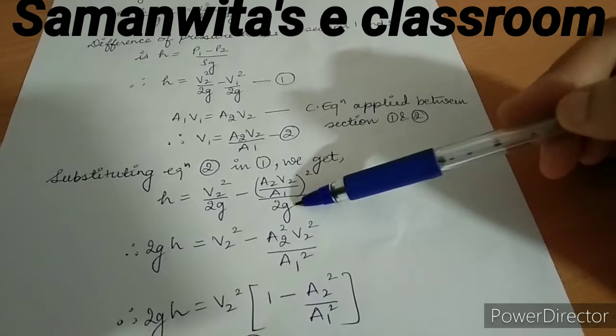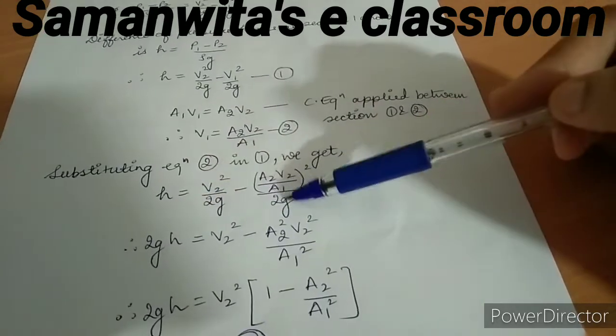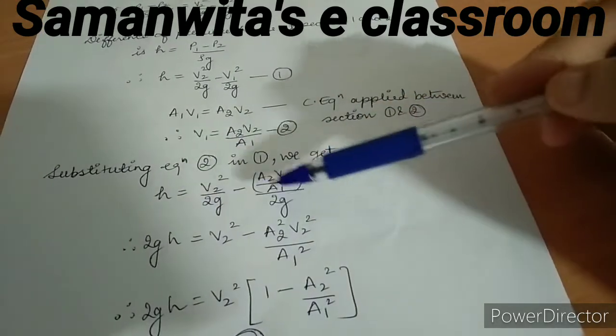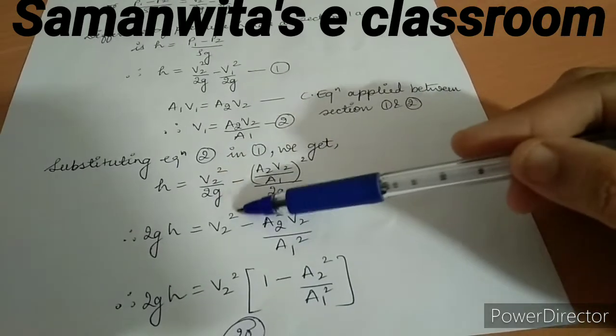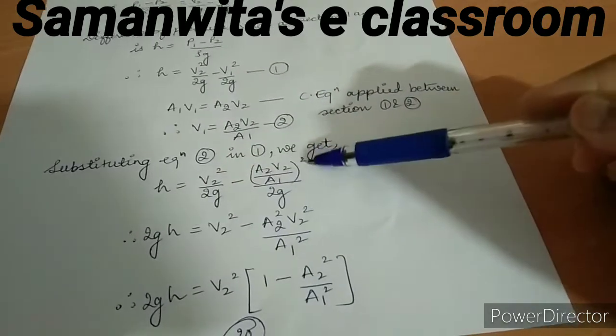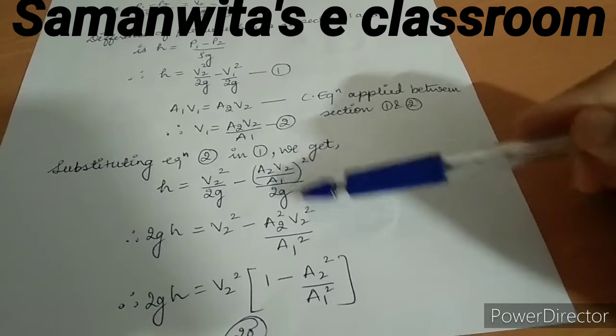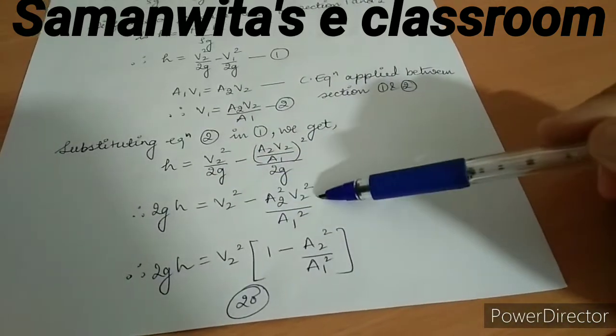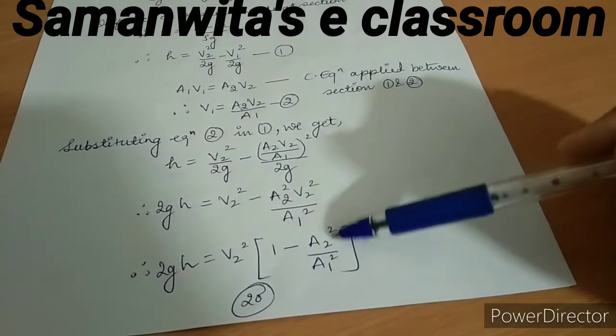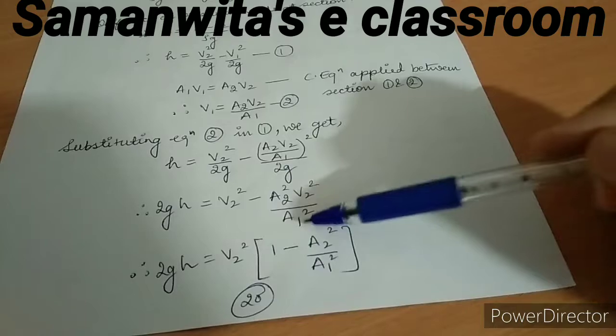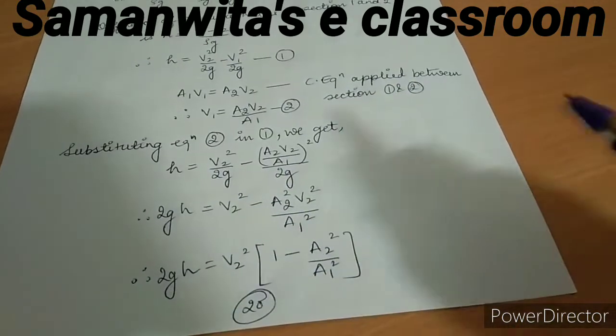Then we get h = v2²/2g - (A2V2/A1)²/2g. I multiply this 2g term over here because it is common to both, it's a common denominator. What remains over here is v2² - A2²v2²/A1². V2² is common in both so I take it as a common term and what remains is 1 - A2²/A1² on the right hand side and the left hand side still remains the same.